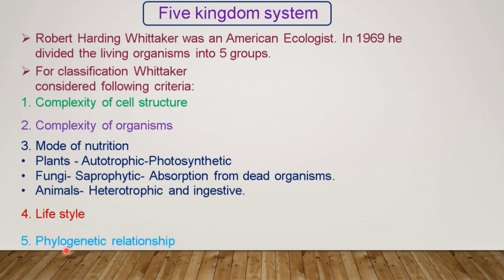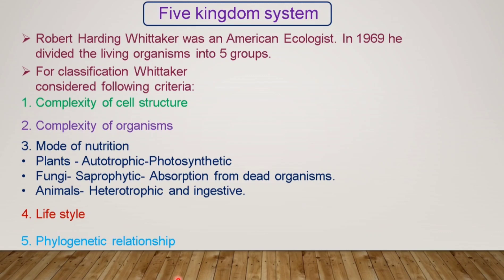The fifth and last criterion is phylogenetic relationship, where organisms are arranged according to their evolution. For example, humans evolved from monkeys — the ancestors of human beings were monkeys. Similarly, the prokaryotic cell evolved into eukaryotic cells, meaning eukaryotic cells were first prokaryotic. After changes, prokaryotic cells evolved into eukaryotic cells, and unicellular organisms evolved into multicellular ones. These are the five criteria on which Robert Harding Whitaker divided the organisms.